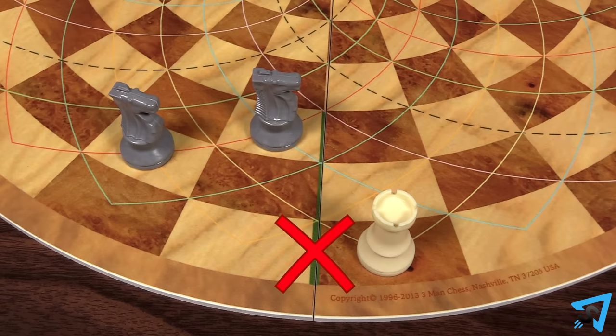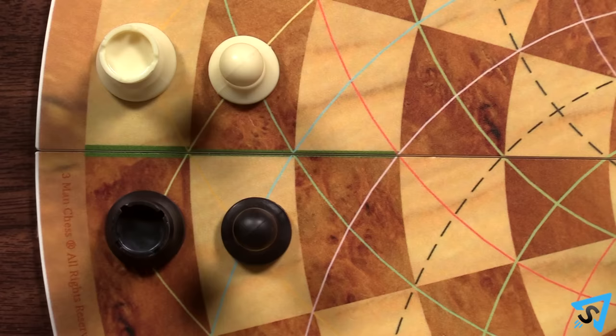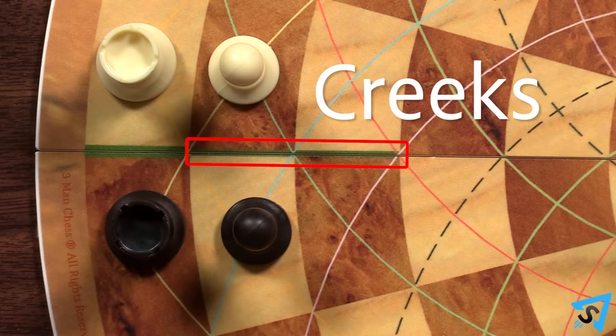The thinner green lines above the moats that run for two spaces are called creeks.